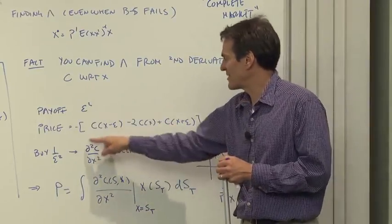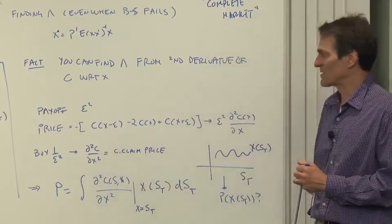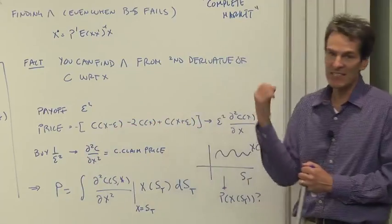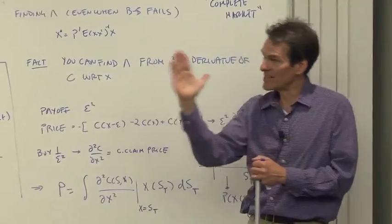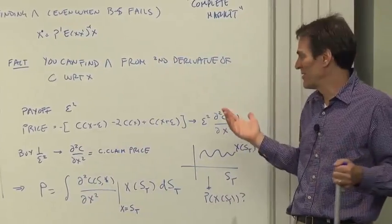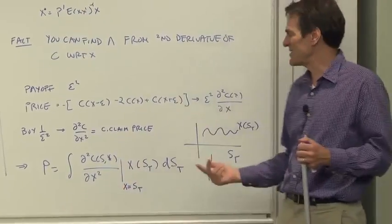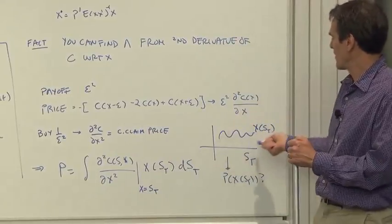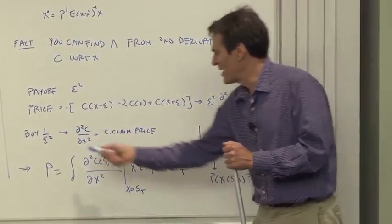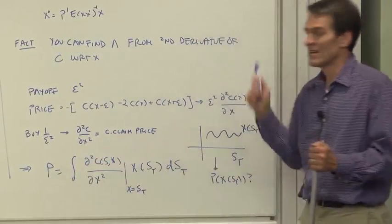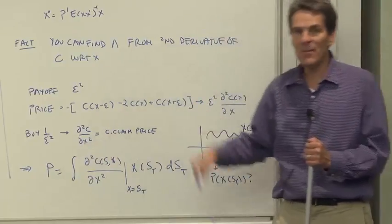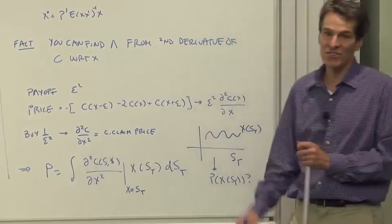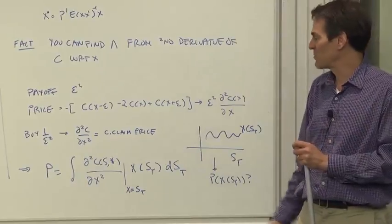The second derivative of a call with respect to price is the price of a contingent claim that pays off only when the stock price gets to just one value. And bingo! Once you have contingent claims prices, you know how to price everything. The price of any, let's think of any function of the final payoff, x of ST. We can find the price of any x of ST like that by price is integral contingent claims price times final payoffs. Multiply and divide by probabilities and you've got yourself a discount factor.